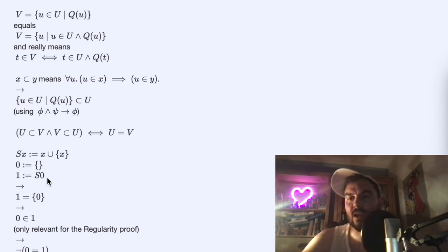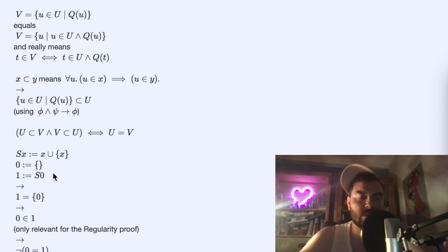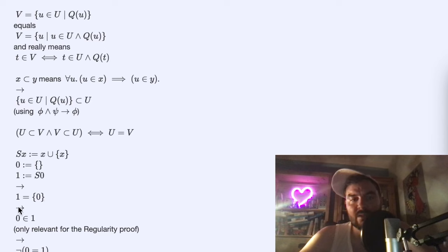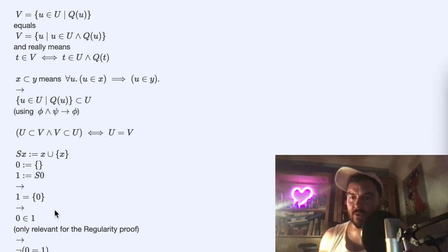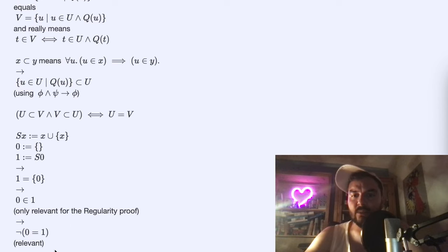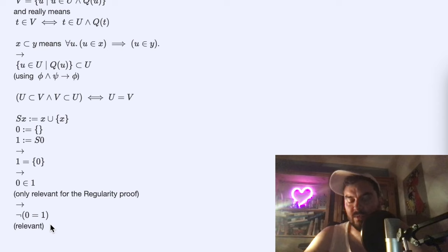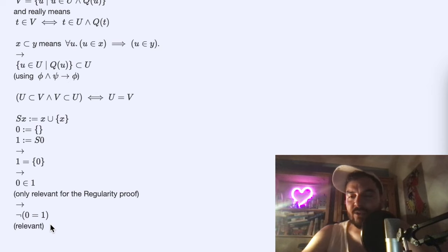We have the binary union over a pair, the singleton, the successor, and we introduce the symbol zero. We can define other symbols: one and zero will be the only really relevant ones. I can also define two, which will also pop up in the proof, but I'll just call it the set holding zero and one. In the regularity proof we make use of the fact that one in this model equals the set holding zero.